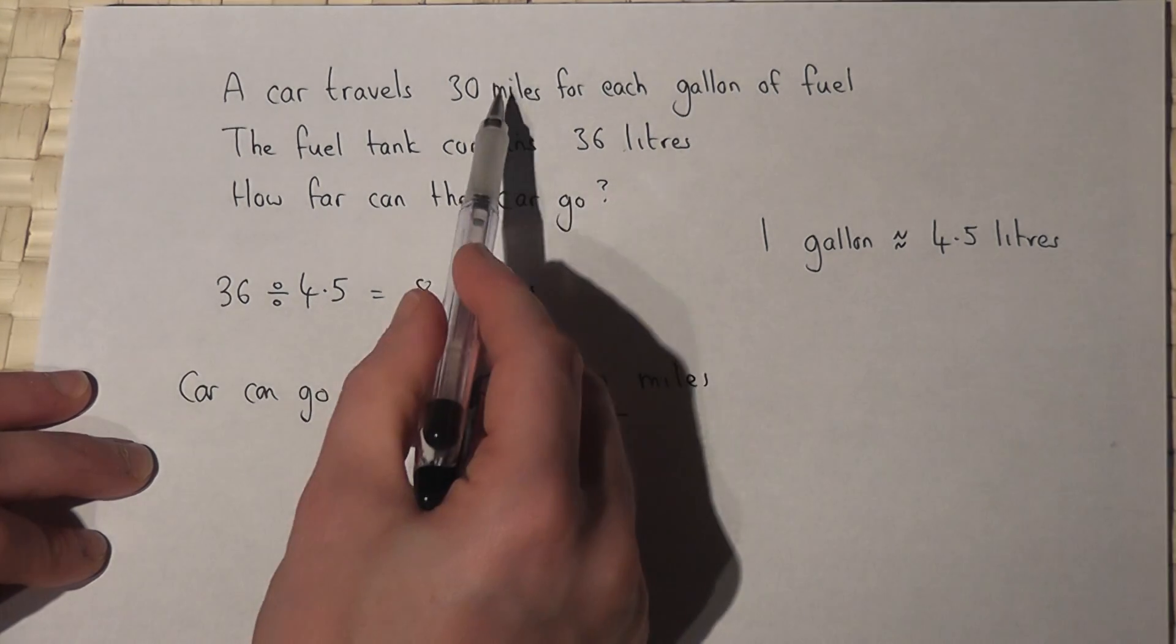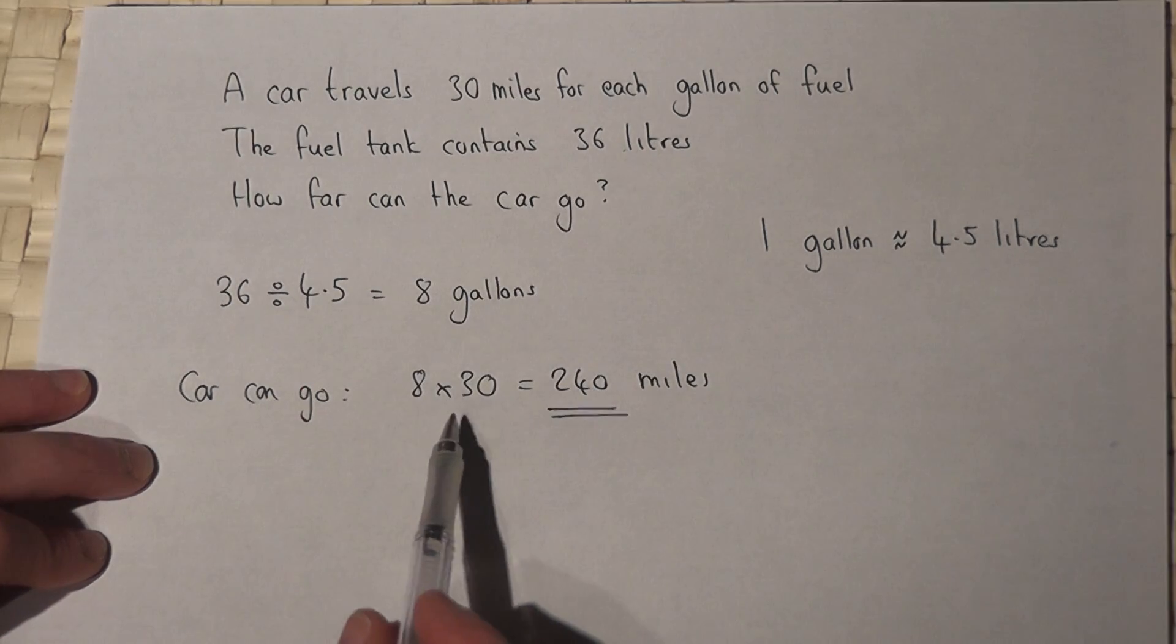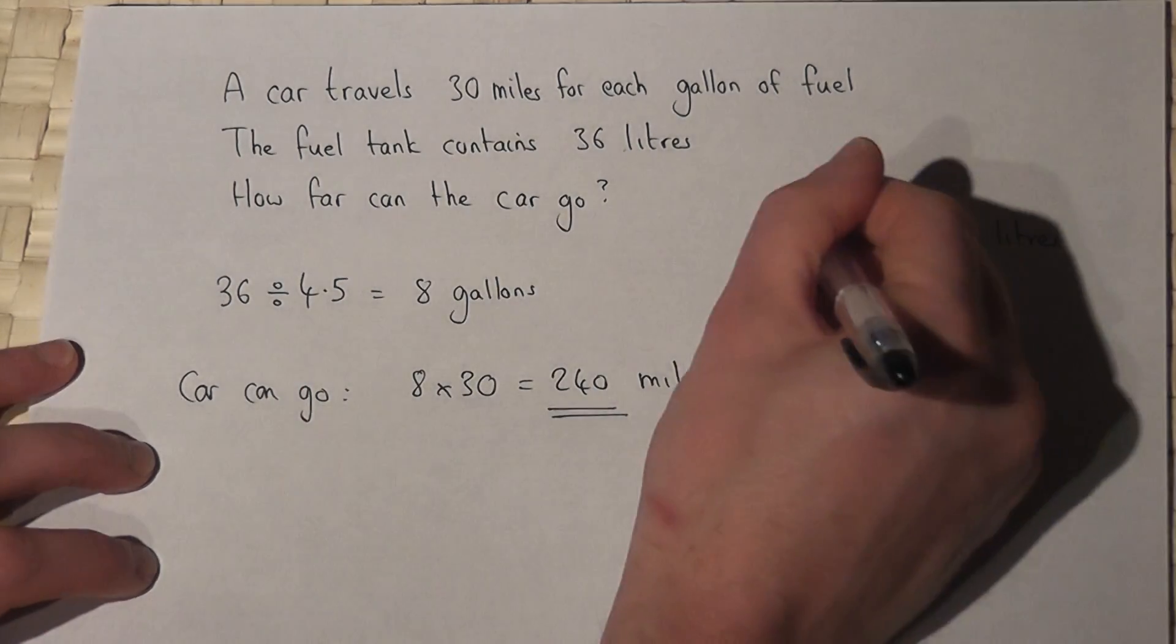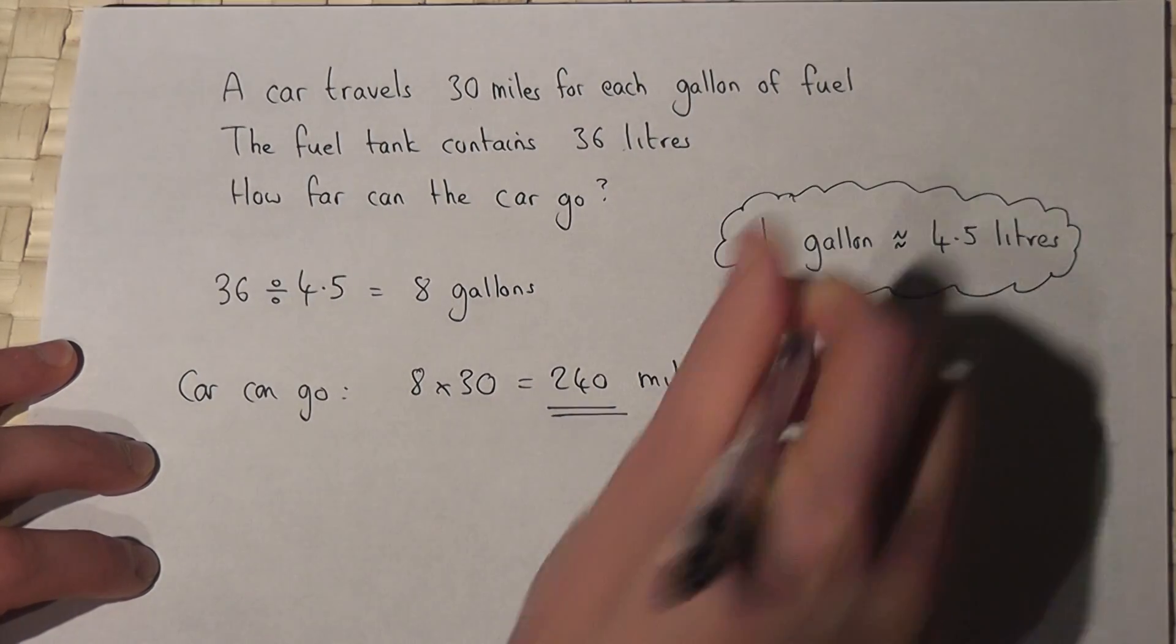Because every gallon is 30 miles, so 8 gallons is 8 times 30, which is 240 miles. And again, this is the key conversion to be aware of.